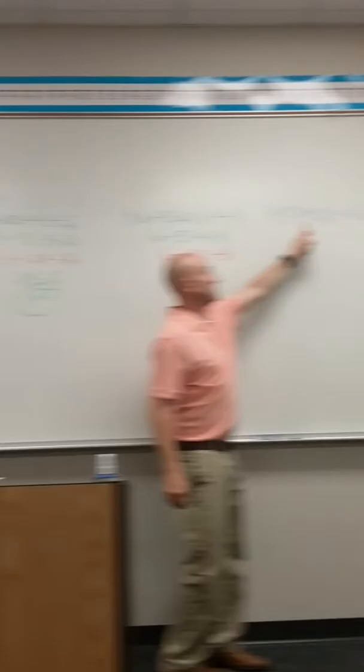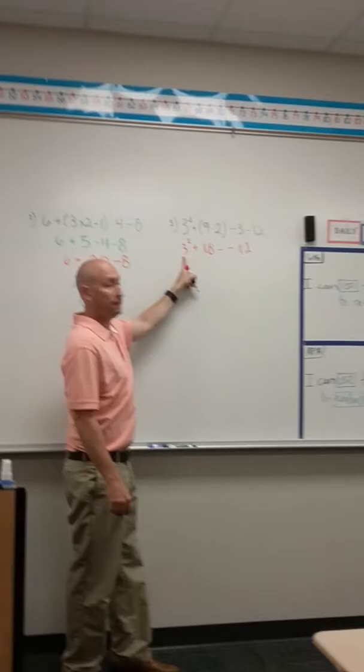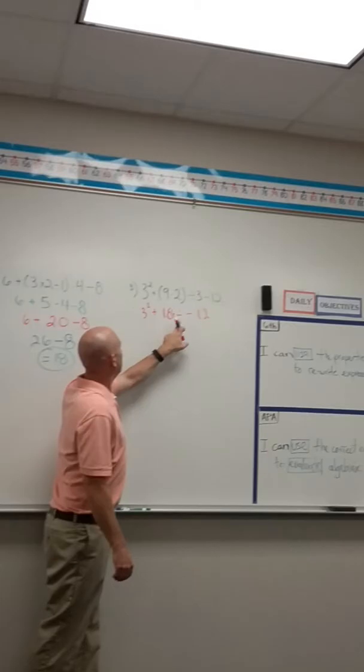Last example I want to do. I've got parentheses and I have exponents along with a division and a subtraction. Following the correct order, I'm going to do parentheses first. So 9 times 2 is 18. Bring down everything else around it.